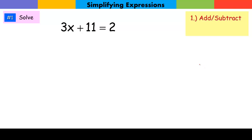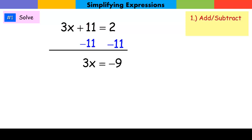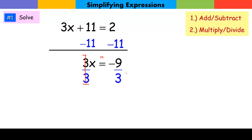Our first step is to add or subtract the constant, so we subtract 11 from both sides. Whatever you do to one side, you have to do to the other to keep the equation true. After subtracting 11, the left side is just 3 times x equals negative 9. Our second step: divide by 3 to get x alone. 3 divided by 3 is 1, and negative 9 divided by 3 is negative 3. This is our solution — if we plug it back into the original equation, it's true.